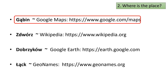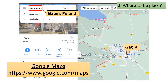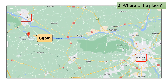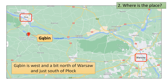We will start with a search for Gąbin using Google Maps. On Google Maps, enter the name of the place you are looking for. Note that you do not need to use special characters for this Google Maps search. Now zoom out on the map to get a better feel for where Gąbin is located. We see that Gąbin is west and a bit north of Warsaw and just south of Płock. We will be using these landmarks for the next section of this video.